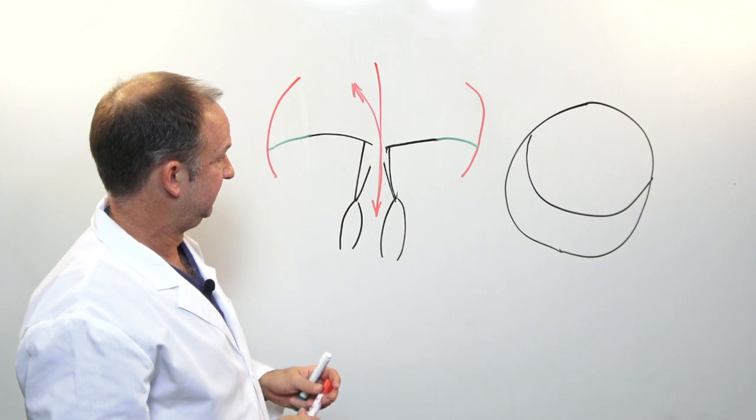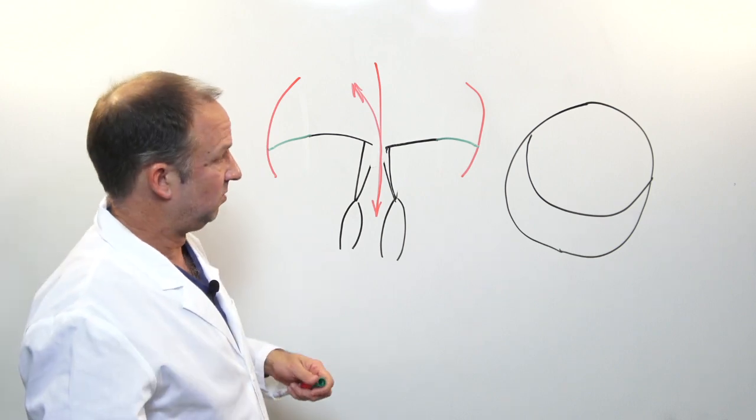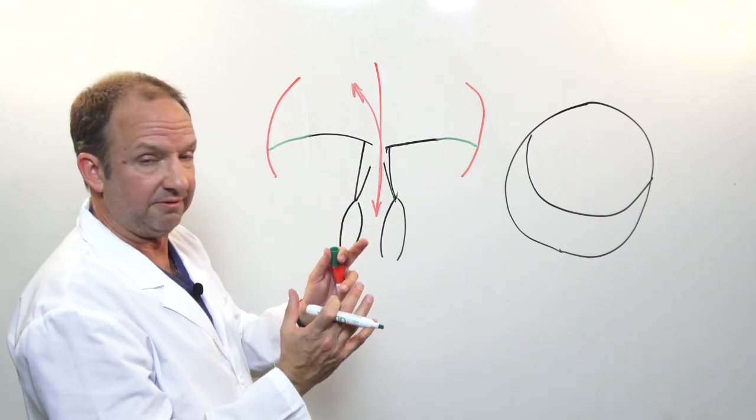Now the solution for this type of problem is kind of a simple one. What we do is we put a belt around the mitral valve.